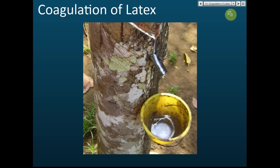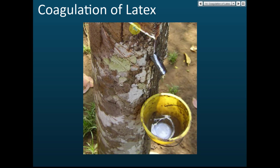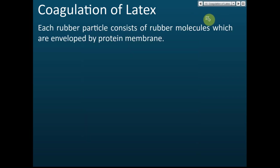Latex is the rubber milk. If you leave latex under normal conditions for about 8 to 10 hours, it will coagulate. You can see parts of the latex already coagulated. Coagulation means that it turns from a liquid into a solid — the latex is initially liquid and then turns solid. This process is called coagulation.